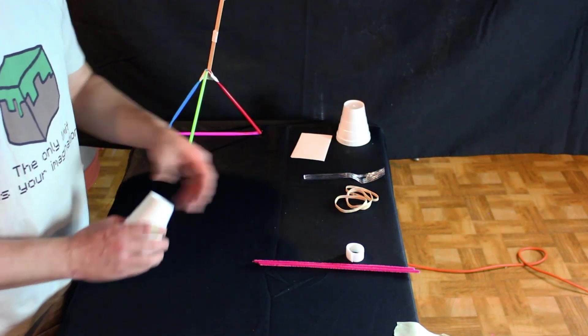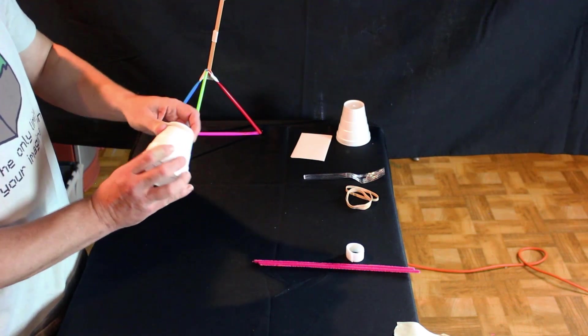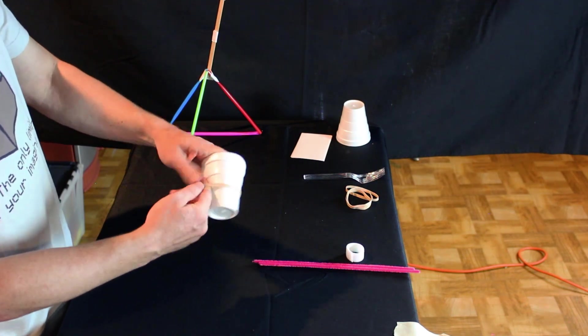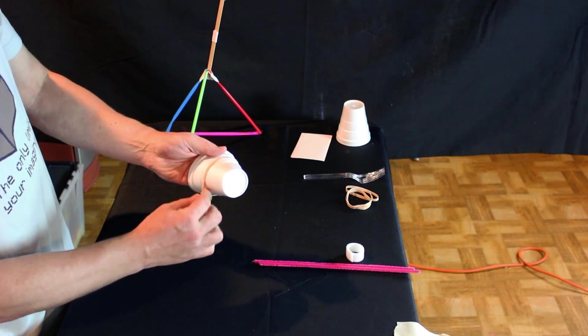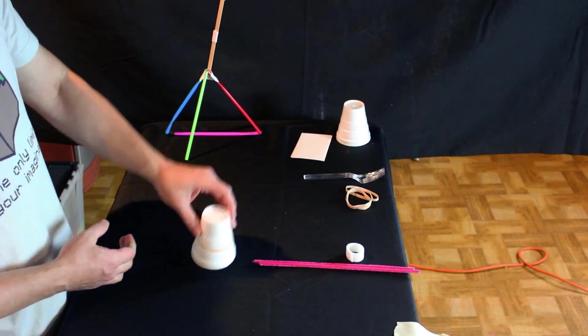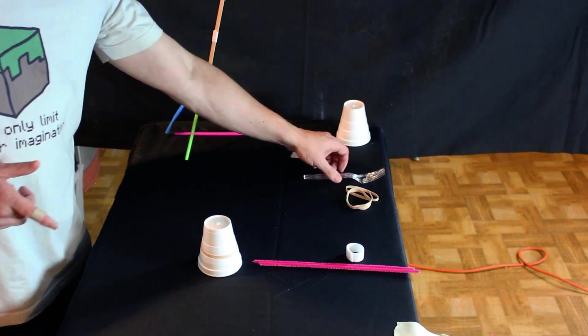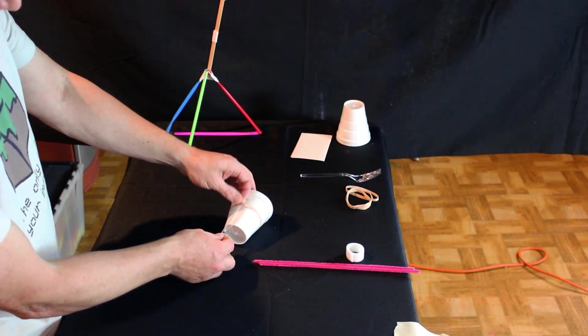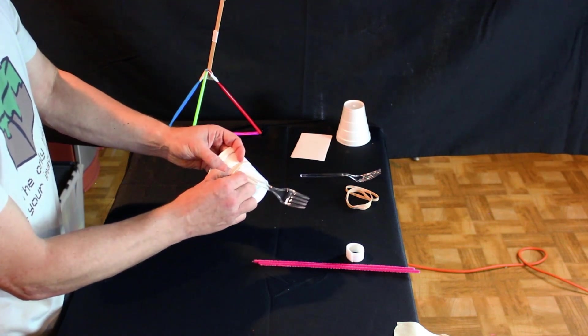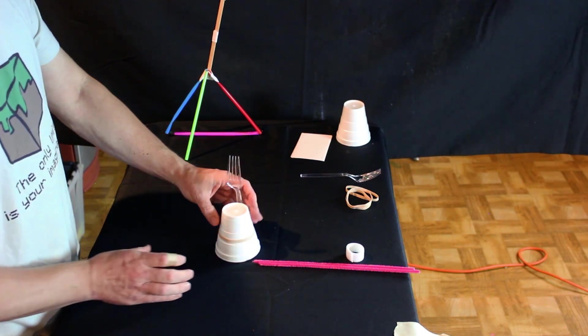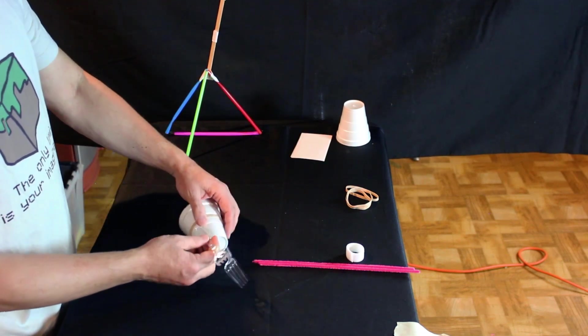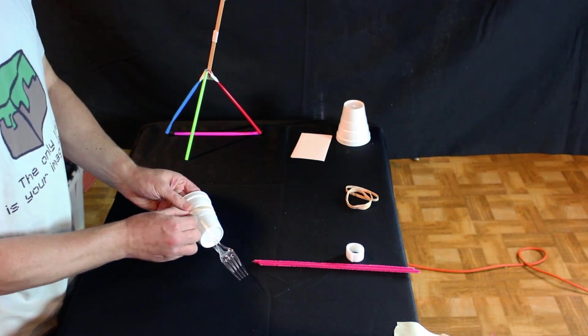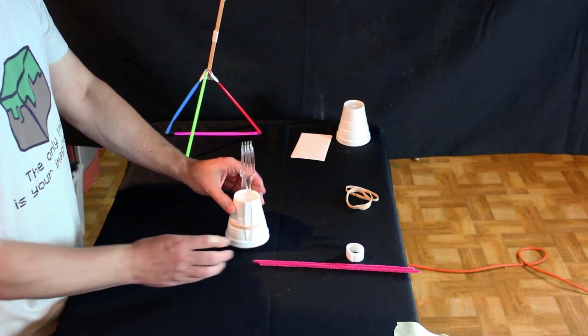First thing we're going to do is take one cup and put our rubber band around it, just right around it. Let's make it go down a little bit, about halfway. We don't want to make it too tight because we don't want to break the cup. The reason for that rubber band is to hold our forks in place. We lift up that rubber band, tuck a fork right in there so it stands just like that. We need the other fork on the opposite side of the cup. Very nice.